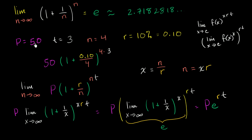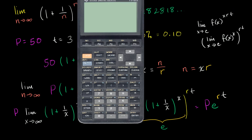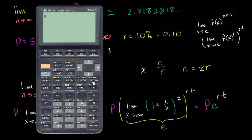Let's do a concrete example. If you were to borrow $50 over three years at 10% interest, but compounding an infinite number of times per year — continuously compounding — the amount you have to pay back is 50 times e to the 0.1 times 3 power. So that's 50 times e to the 0.3, and you would have to pay back approximately $67.49.